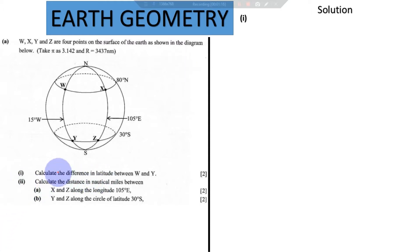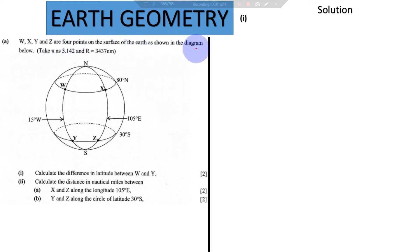So we have this question here. It says W, X, Y and Z are four points on the surface of the Earth as shown in the diagram below. Take pi as 3.142 and Earth's radius as 3437 nautical miles.